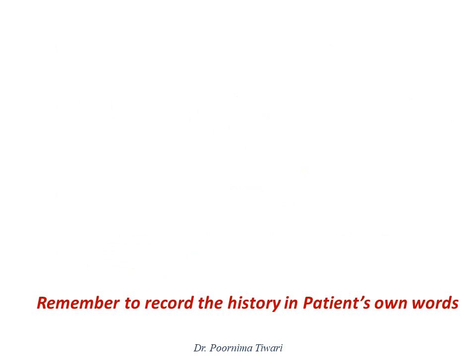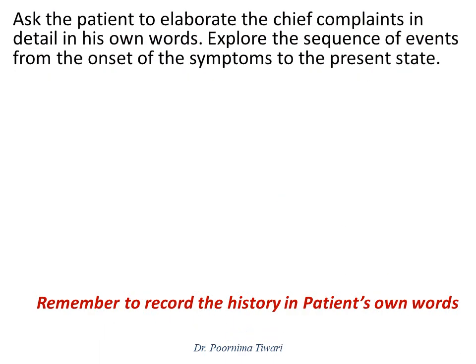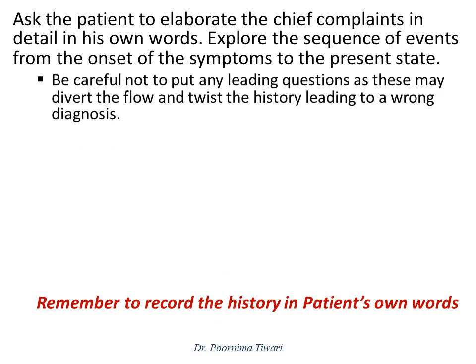History of presenting complaint is the main part of the history, and you must spend some time discussing this with the patient. A chronology of the illness has to be determined — it is best begun by asking 'When were you last well?' Allow the patient to speak out the description of the first symptom from the beginning till the present, and how other symptoms came up and progressed. Be careful not to ask any leading questions. Allow the patient to speak in their own words, and record in the patient's language, because asking leading questions will twist the history and may ultimately lead you to a wrong diagnosis.